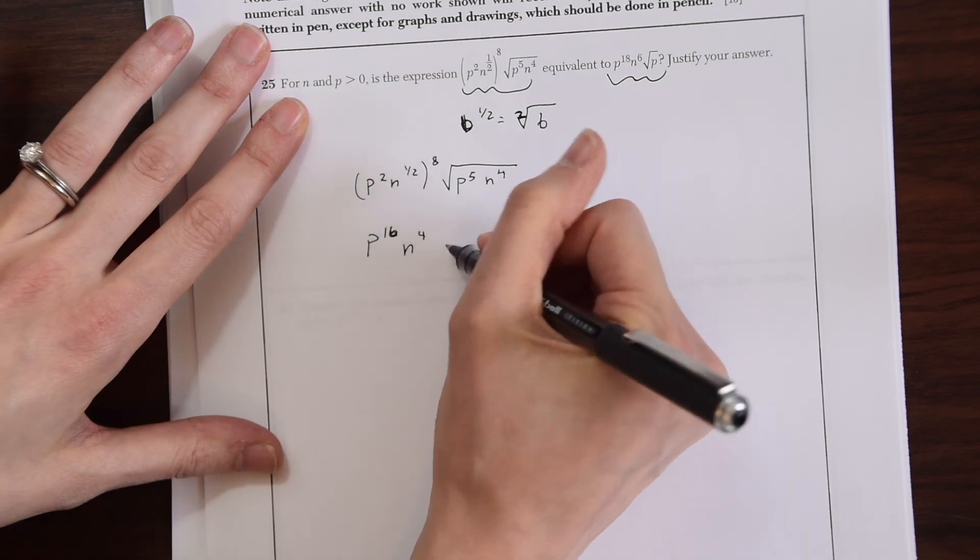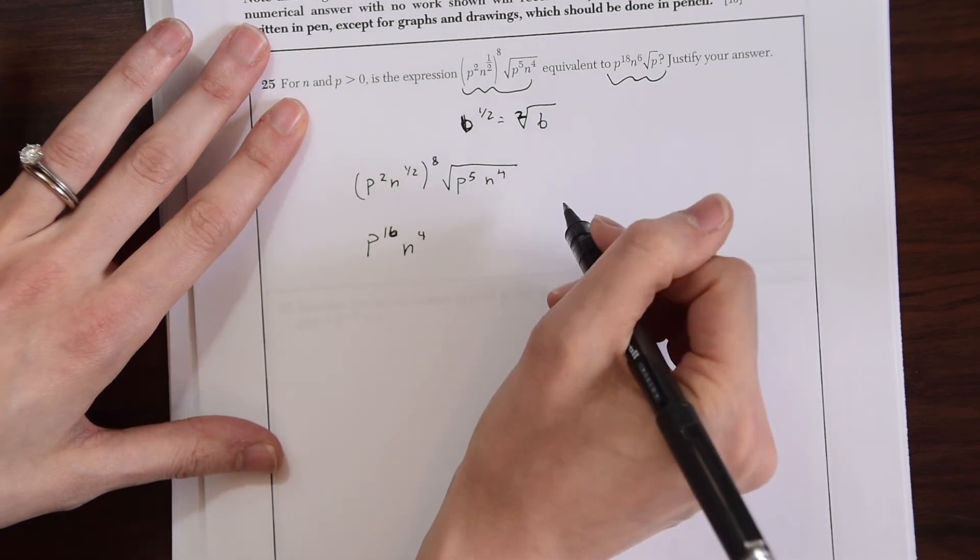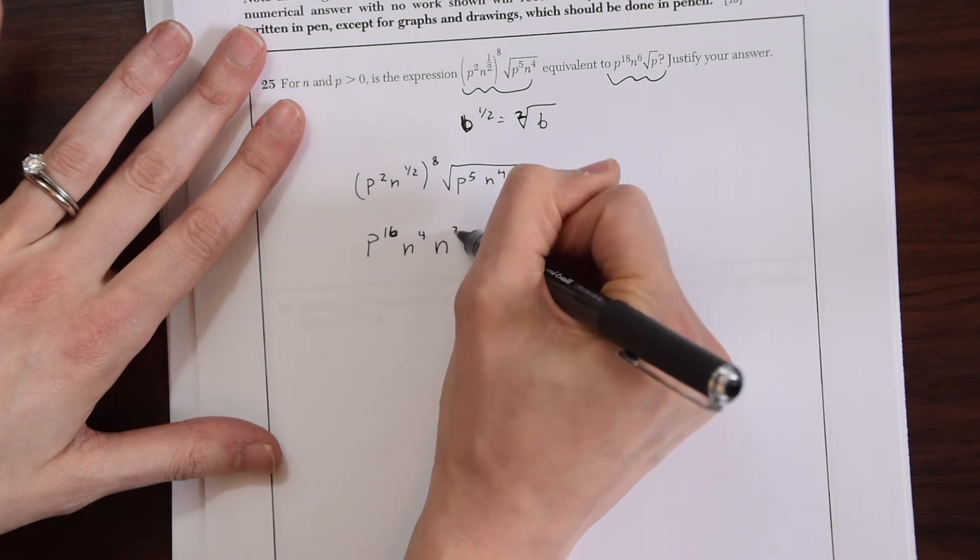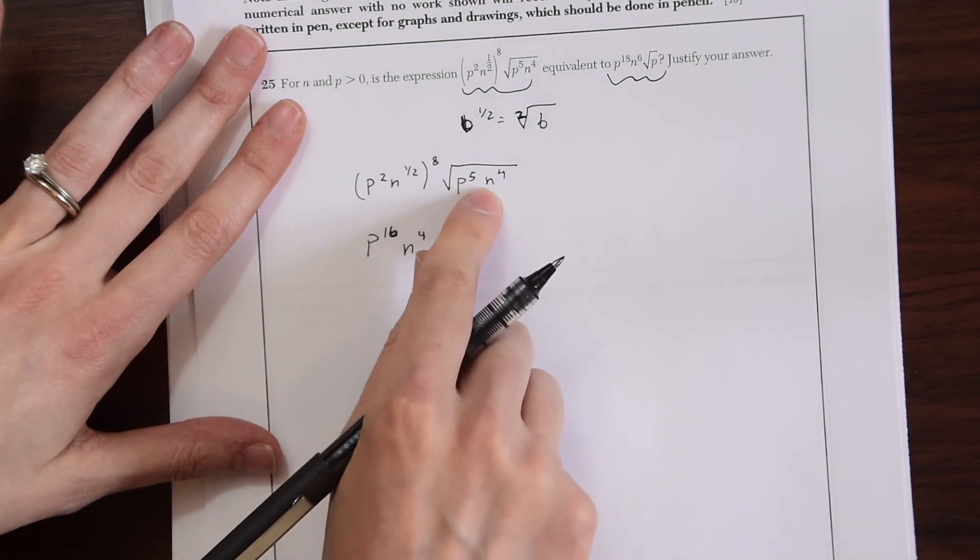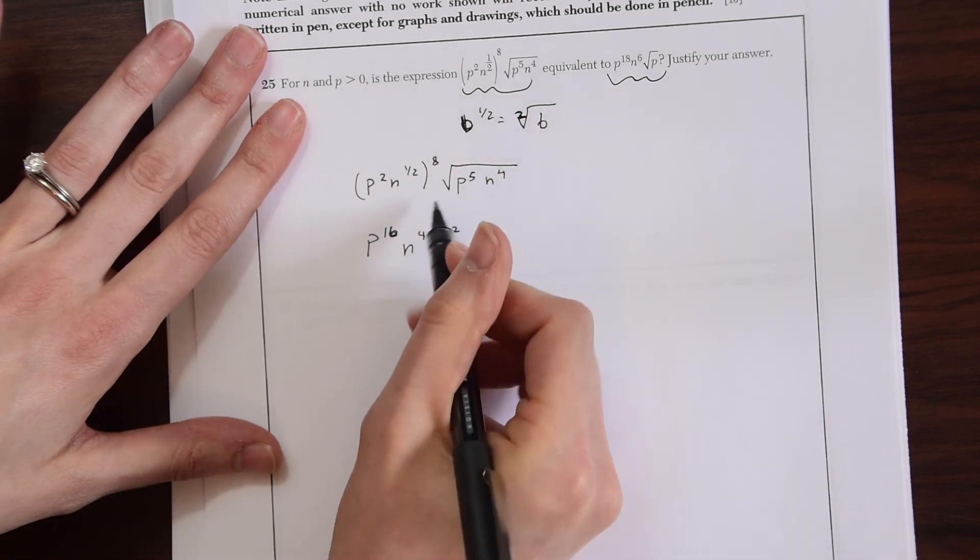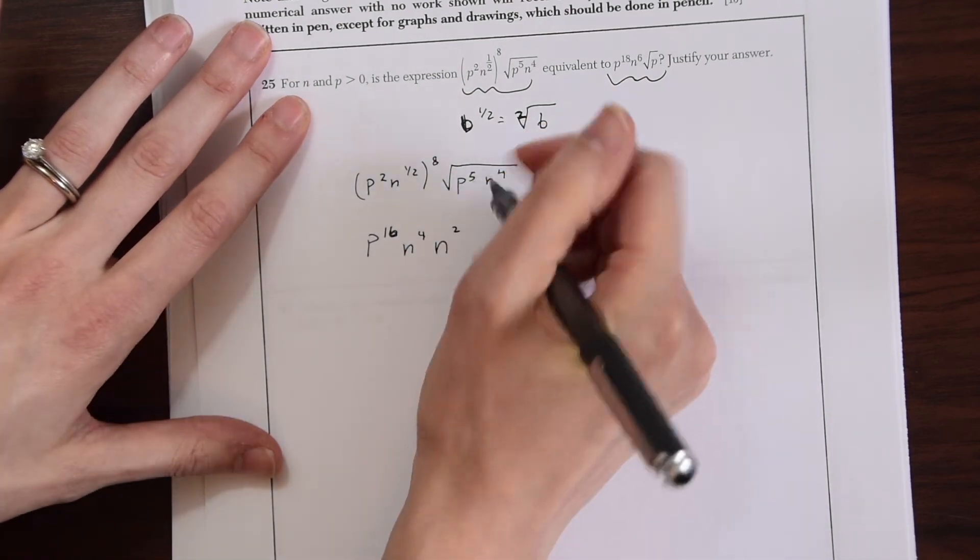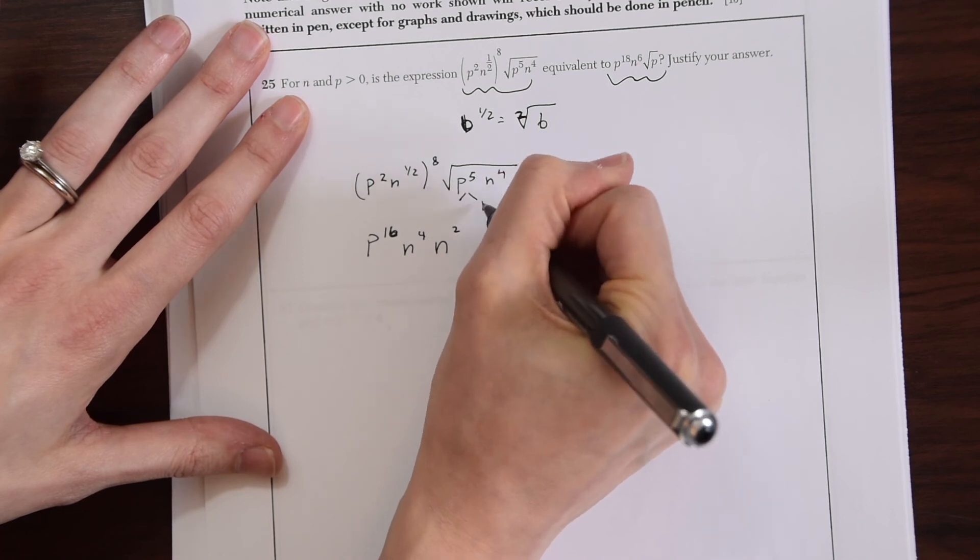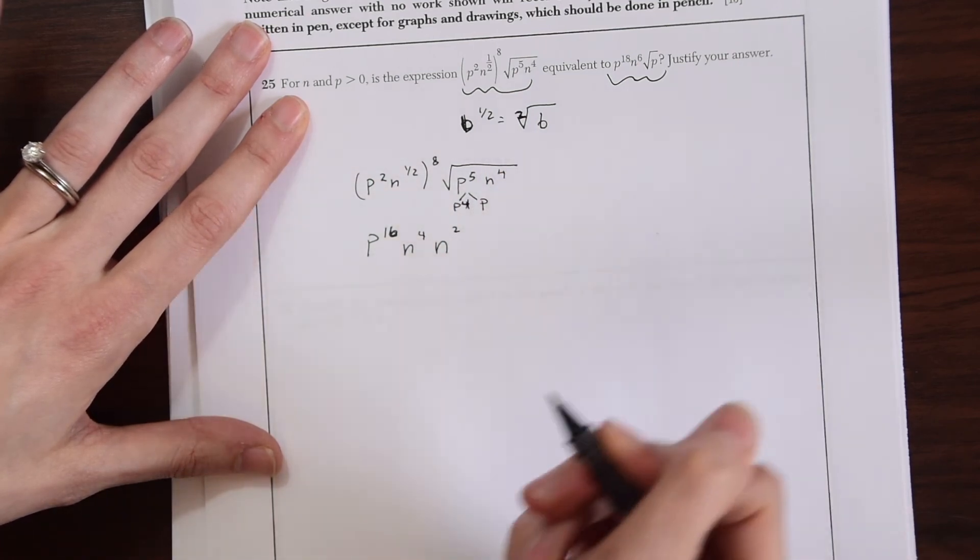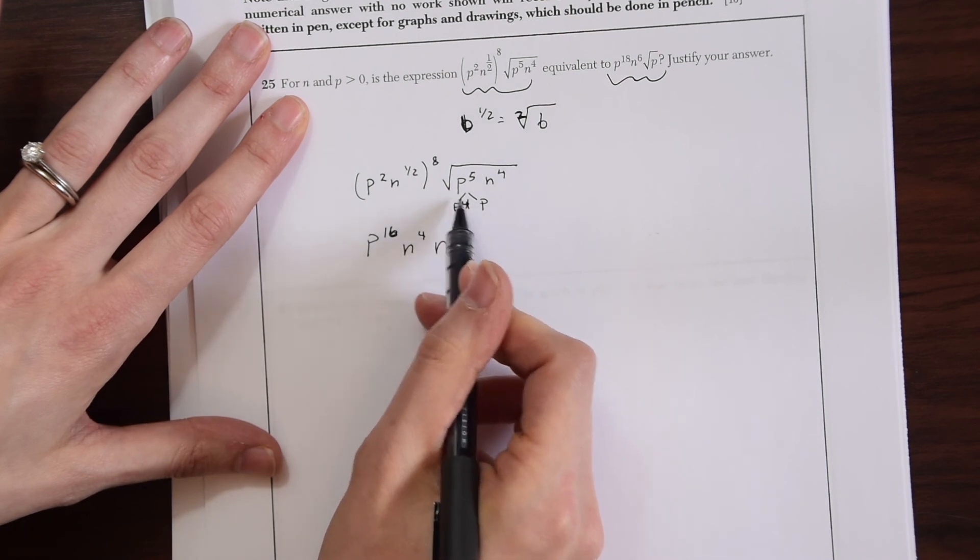And then here we have radical p to the fifth n to the fourth. We can take out an n squared because we just want to divide these by two. P doesn't as easily divide by two though like that. So we can split this into p and p to the fourth.